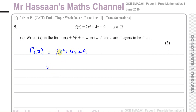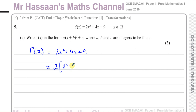When we complete the square, we want the coefficient of x squared inside the bracket to be 1. As we see in the form, there must be a 1 there. So what I must do is take out 2 as a factor, which will cause the x squared coefficient to become 1. So this will be 2 times x squared — but as I've taken it out, I must also take it out of the second term, so I'll write plus 2x.